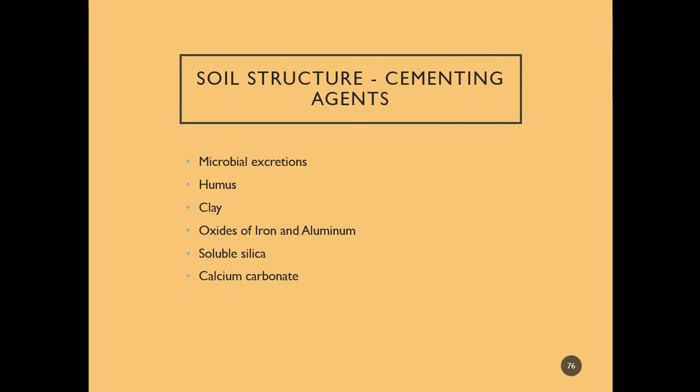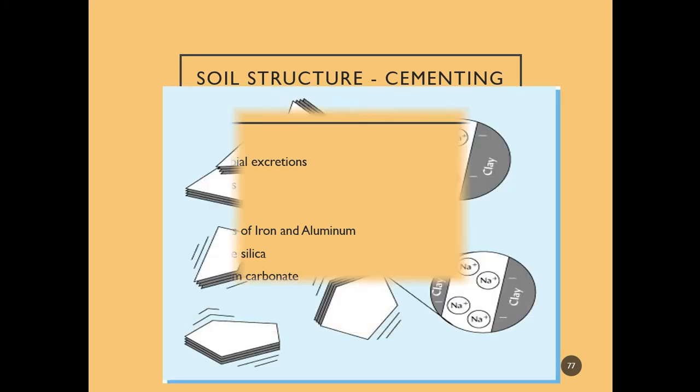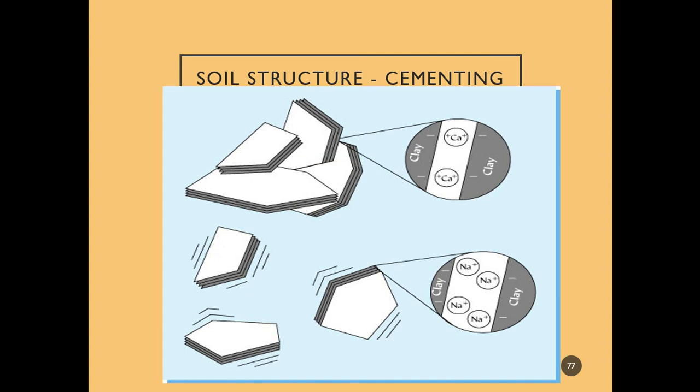Soil structure is cemented by many different things in soil. Microbial activity is a really important one, and we can actually use soil structure shape and strength to estimate microbial activity. The humus content, clay content, and different oxides and chemical components can affect how well those particles stick together.